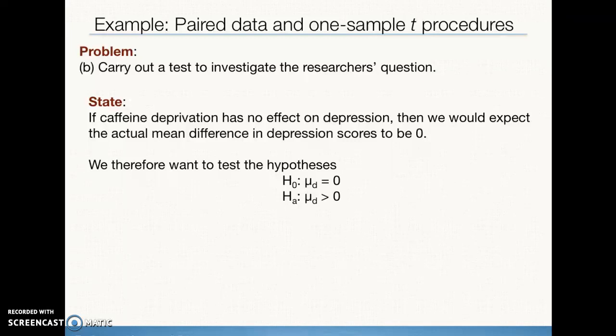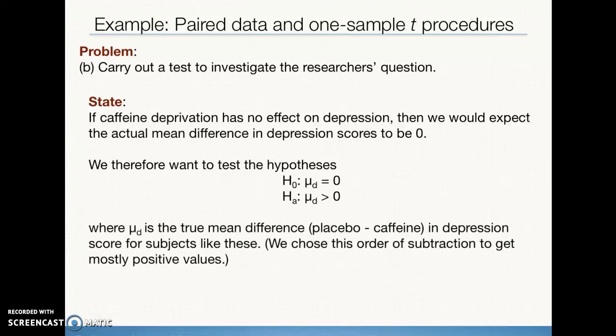Our alternative hypothesis is that there is a positive difference. And if you remember the direction of the subtraction, that indicates we would have a greater depression level when subjects were taking the placebo. In this case, we indicate what our parameter of interest and our population of interest are. So this says where mu sub d is a true mean difference, placebo minus caffeine, and depression scores for subjects like these. And we choose the order of subtraction. We could have done it the other way, but because we're trying to find positive reporting of depression, we chose it this way.